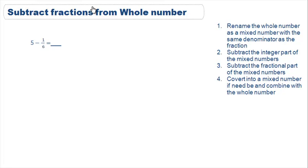Step 1 says rename the whole number as a mixed number with the same denominator as the fraction. Breaking that down a little bit, we know that we have 5 wholes. We also see that those 5 wholes were originally divided into 6 equal parts.